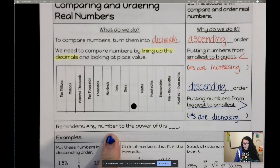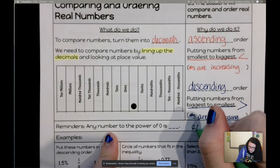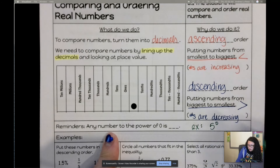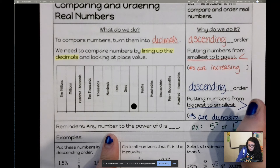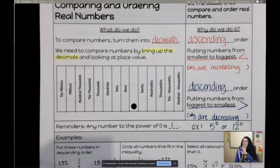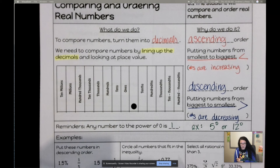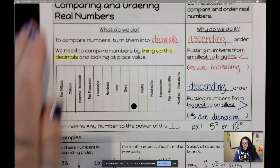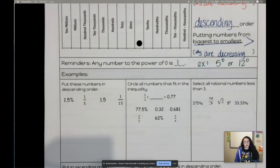A quick reminder: any number to the zero power equals one. For example, five to the zero power or twelve to the zero power — even five billion three hundred sixty million two hundred seven thousand fifteen to the zero power — it's still one. You have a calculator this year, which is nice to double-check work, but you need to know what you're typing before becoming a robot.